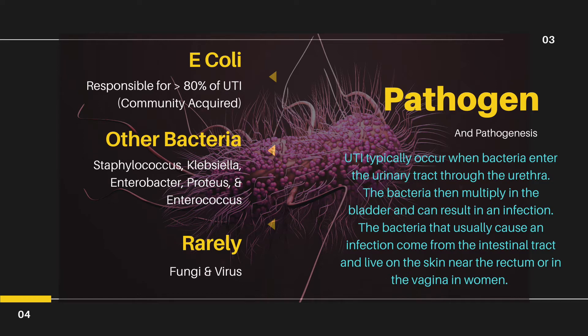In most cases UTI is an ascending infection. The bacteria that usually cause this infection come from the intestinal tract and live on the skin near the rectum or the vagina in women. These bacteria enter the urinary tract through the urethral opening, ascend into the urethra, then multiply and grow in the bladder, and if not treated at that stage, may also ascend further toward the kidney.